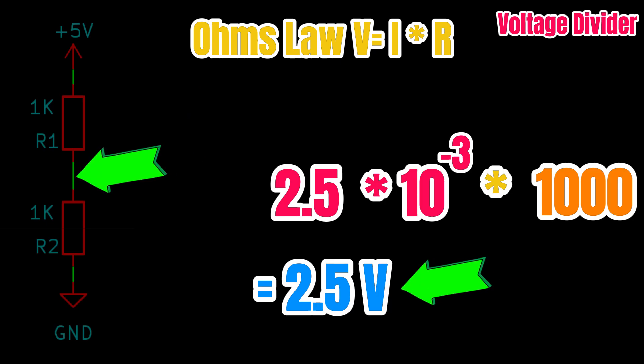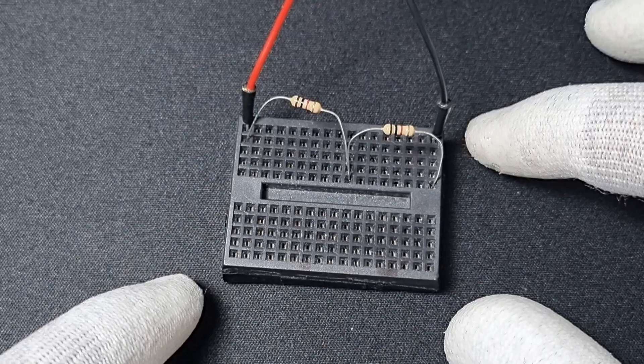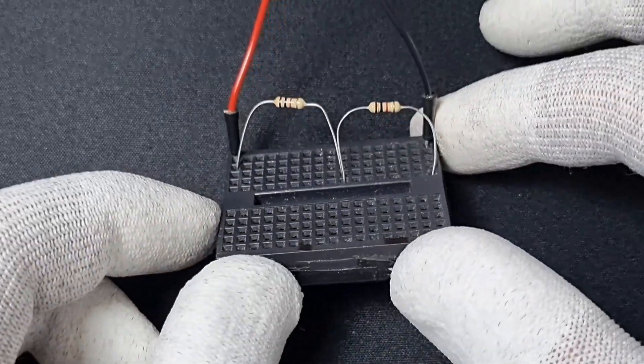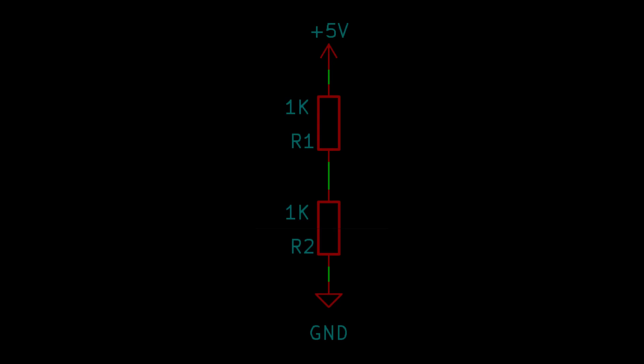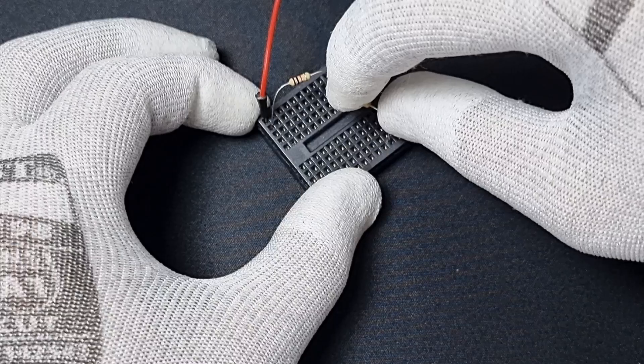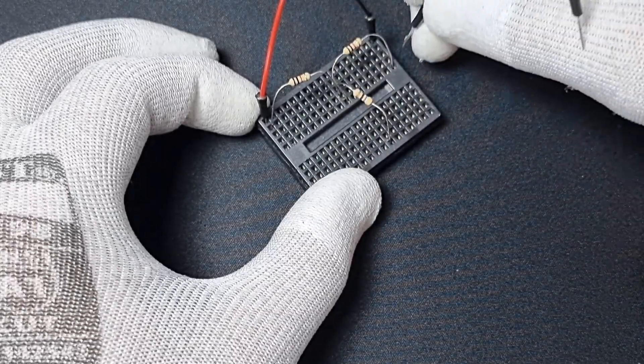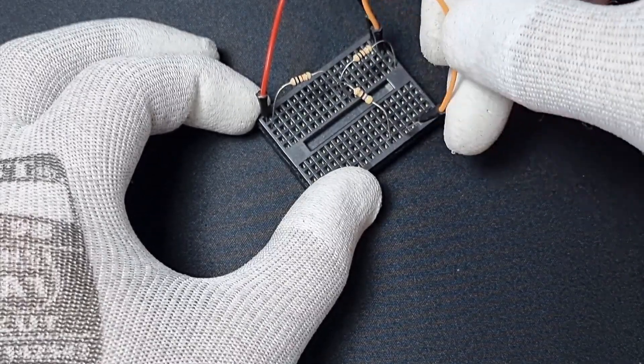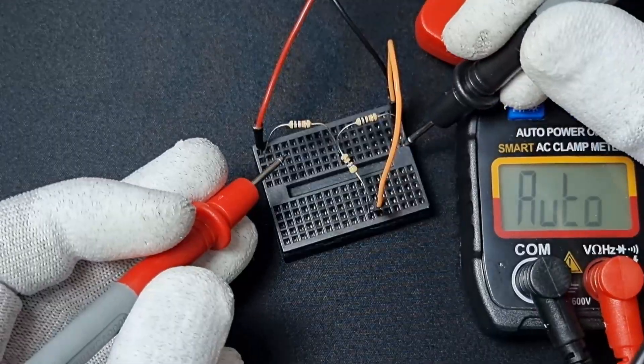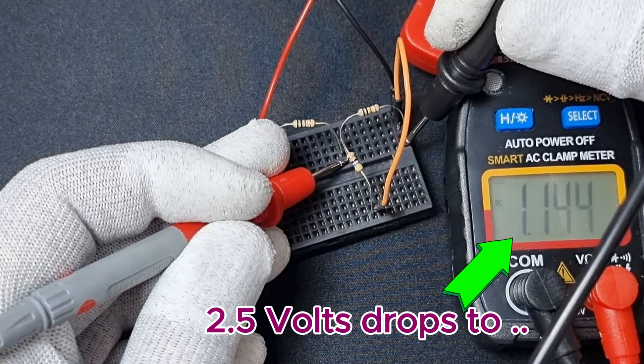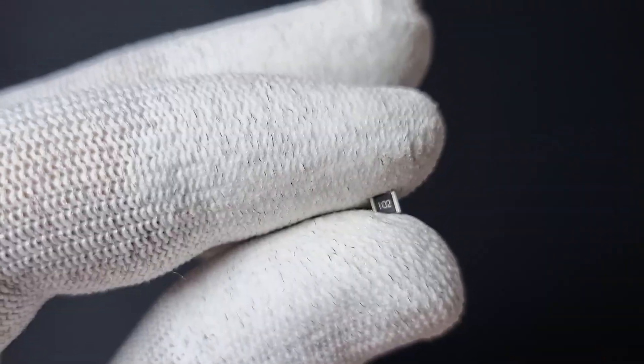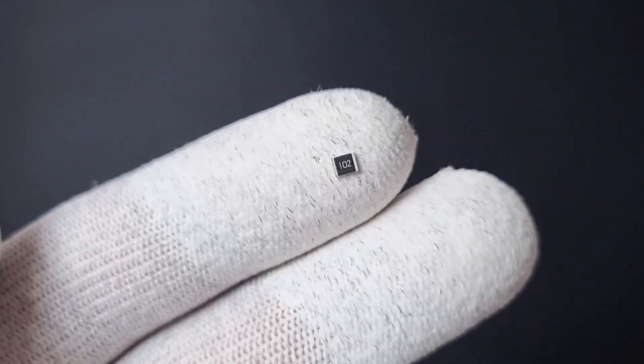A voltage divider might seem like a reliable power source, but it's not. Its output voltage varies based on the input voltage, and you can't draw much current from it without causing a significant voltage drop. For example, if I connect a load here, you will see how much the voltage drops. We'll explore some applications of this circuit later in the video.